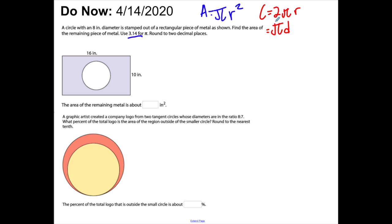The first problem: a circle with an 8-inch diameter is stamped out of a rectangular piece of metal as shown. Find the area of the remaining piece of metal using 3.14 for π and rounding to two decimal places.